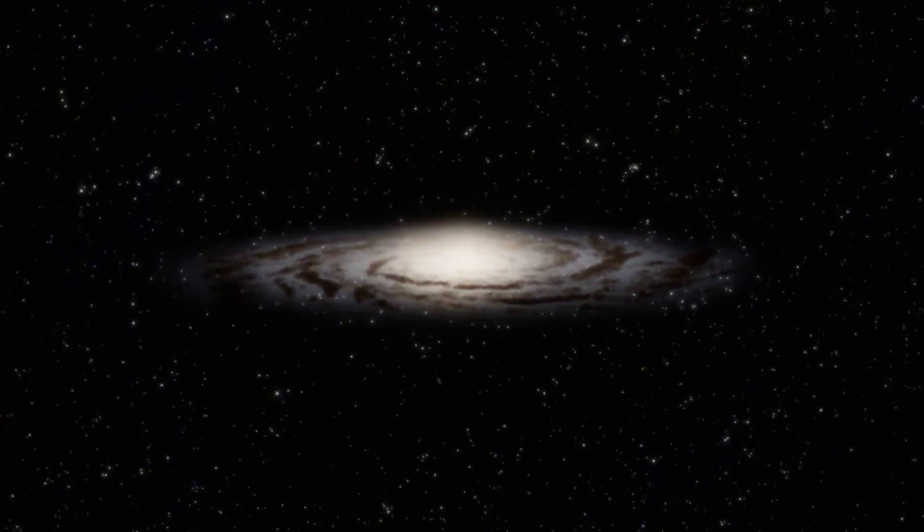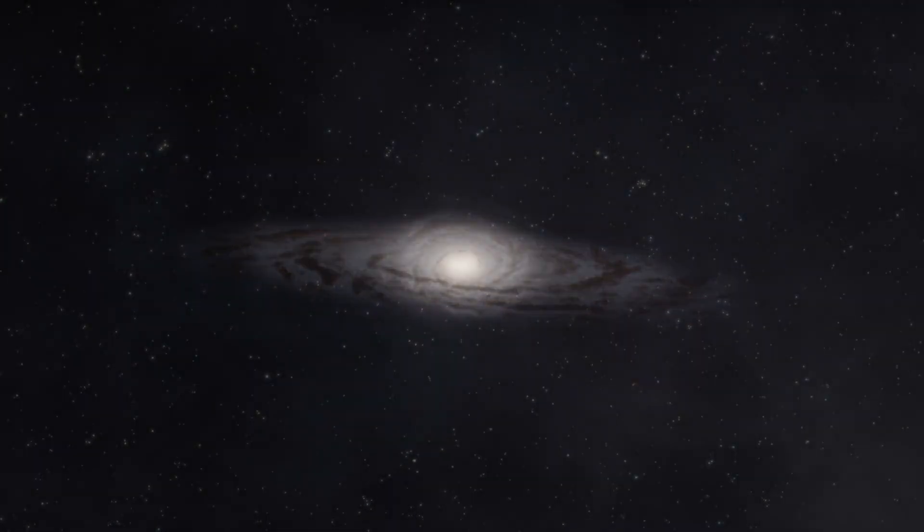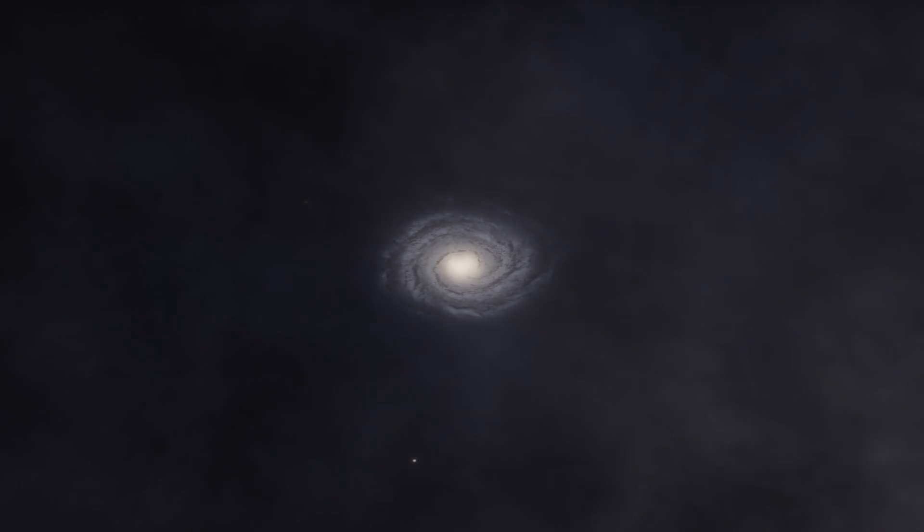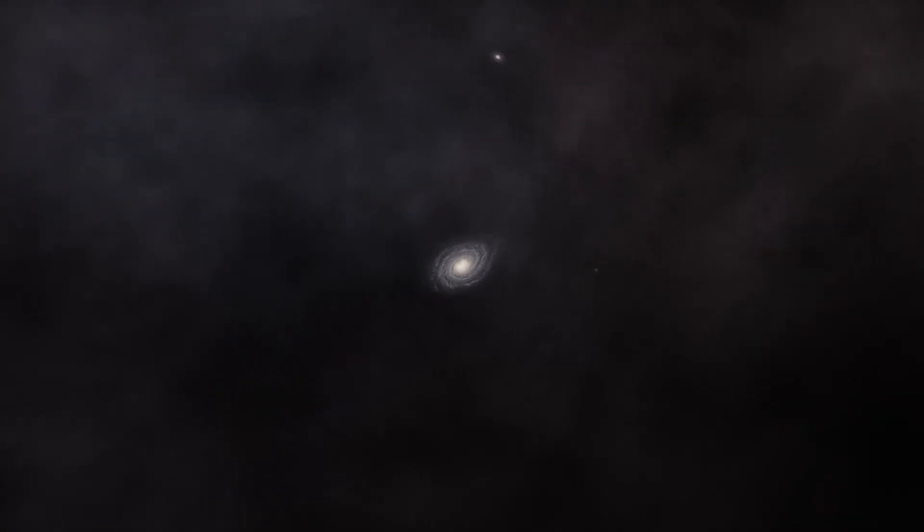However, the greatest mystery lies in how these early galaxies managed to attain a sense of order amidst the chaos of the early universe. Although the universe was a tumultuous place at the time, the GLAAD Z-12 galaxy and its companion exhibited a surprising tranquility and structure.